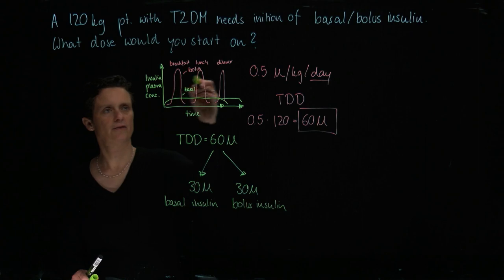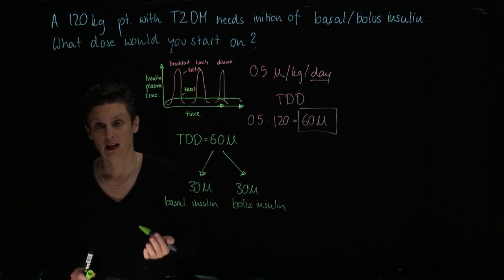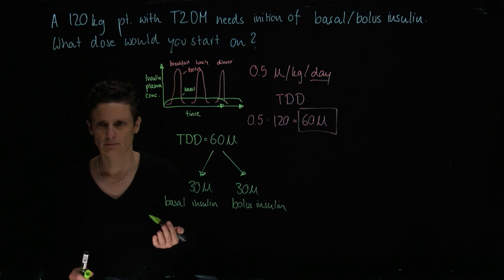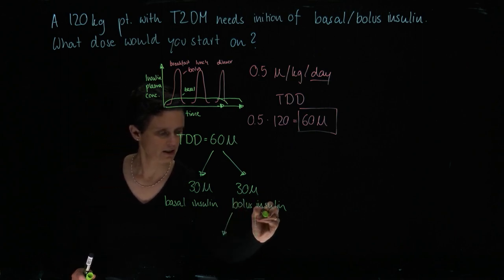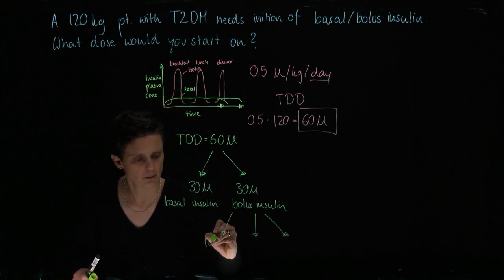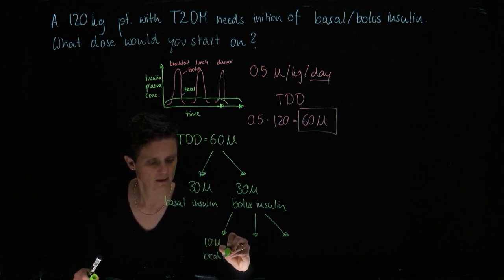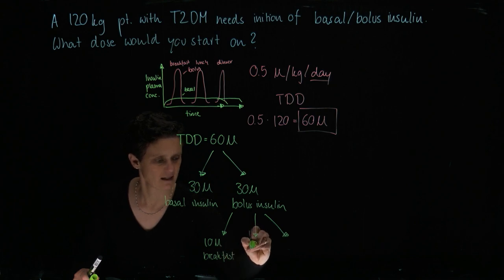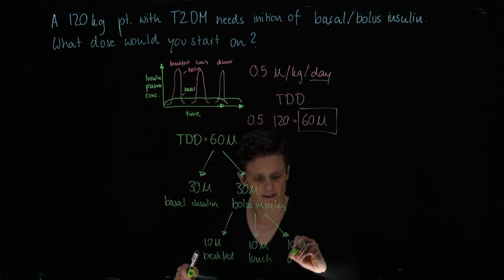And as you can read off this graph, we have usually three times a day a meal. So what we're going to do is we're just going to split this bolus dose in three parts. So we're going to end up with 10 units for breakfast, 10 units for lunch, and then we're going to have 10 units for dinner.